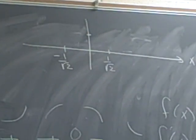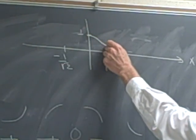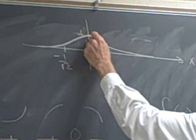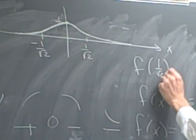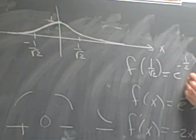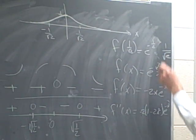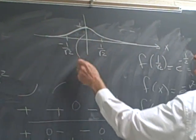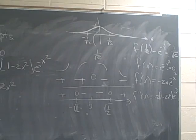The value of the function at 0 is 1. The graph should be symmetric. f(1/√2) is e to the minus (1/√2)², which is e^(-1/2), so that's 1 over the square root of e. That's the value at the inflection point. And that's the sketch of our graph — we've done all we need to do with the critical behavior.